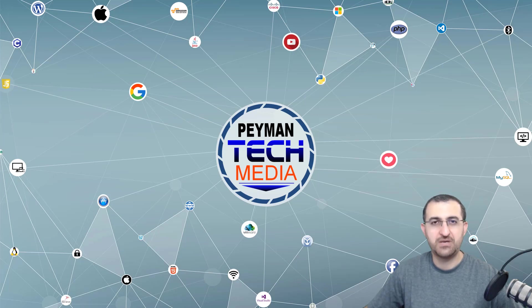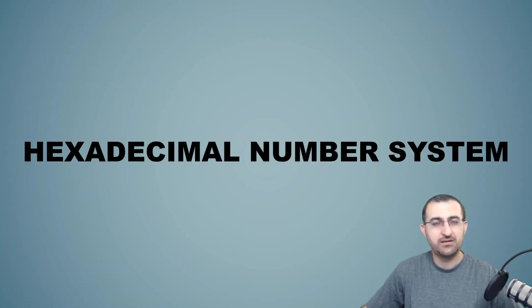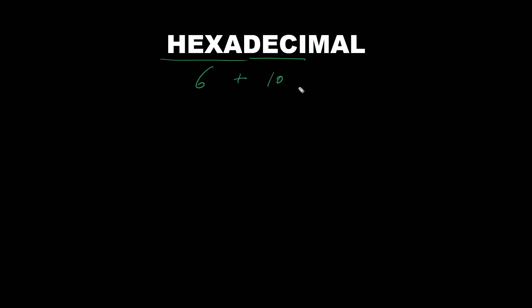Hello everyone, welcome to Payment Tech Media. In this video you are going to learn about the hexadecimal number system. Looking at the word hexadecimal: the prefix 'hexa' means six, and in 'decimal' the prefix 'deci' corresponds to ten. Therefore six plus ten is sixteen, so hexadecimal is a base-sixteen system. We have zero, one, two, three, four, five...